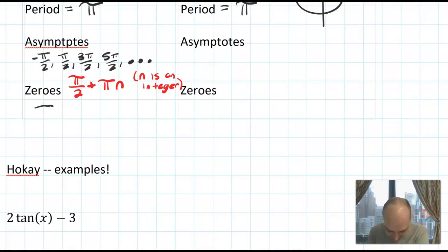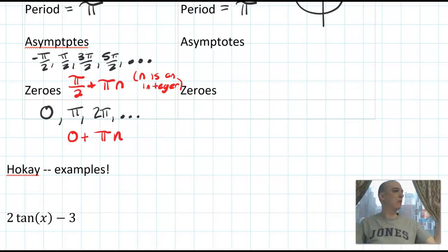Zeros of tangent. The zeros happened at 0, π, 2π, etc. And so the expression we'd write here is 0 plus πn. And you can notice that depending on what the n value is, if n is 1, you get π. If n is 2, you get 2π. If n is negative 1, you get negative π. So that expression could encapsulate all of the different zeros.